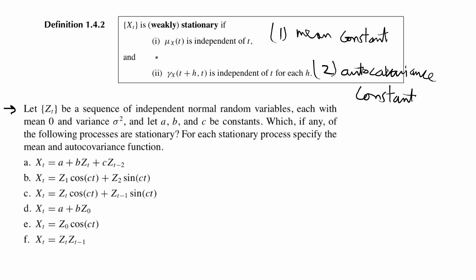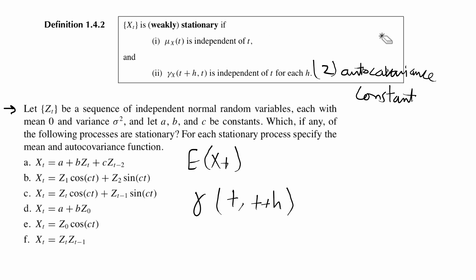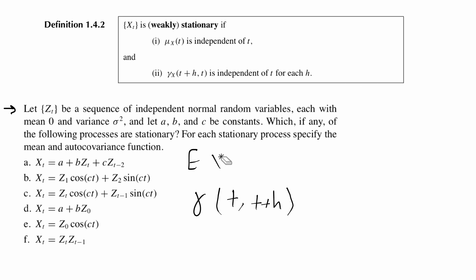Essentially, if you're checking for stationarity of a time series, you want to get the expected value of your time series and make sure it's constant and doesn't depend on time. Also check the autocovariance between time t and time t plus any lag, and make sure that is also constant. If your first two moments are constant, your time series meets the definition of weak stationarity. For this video I'm going to do problems a and b.